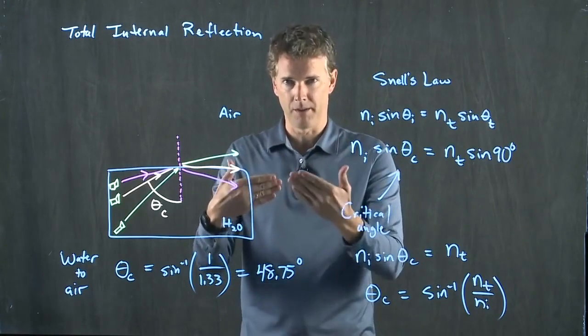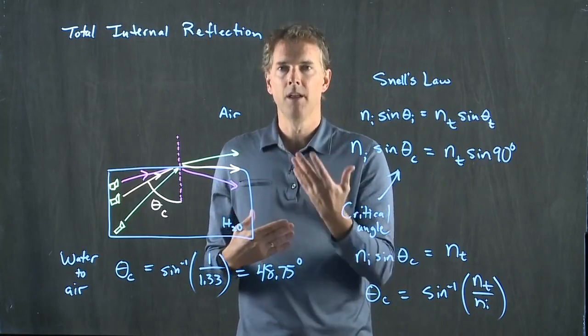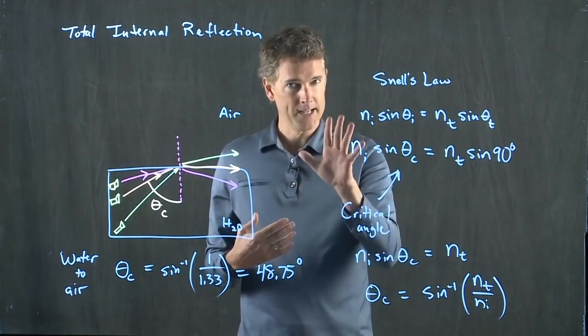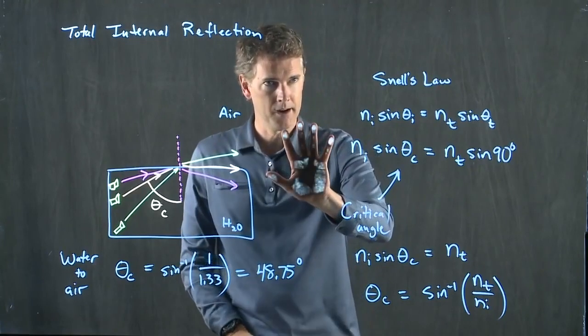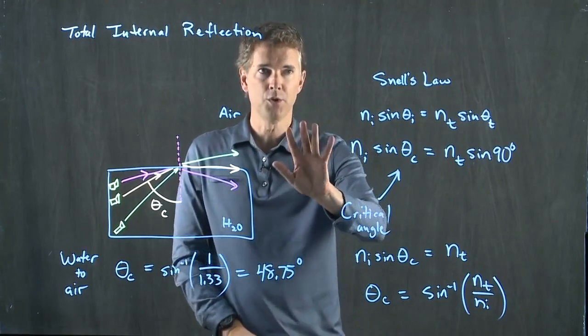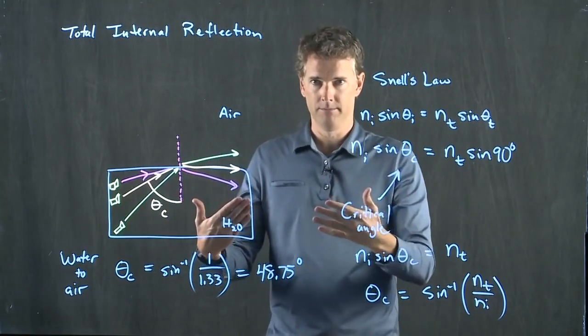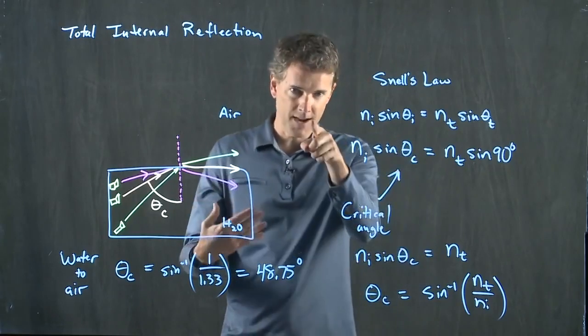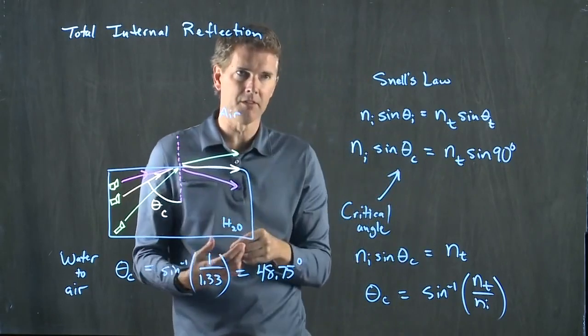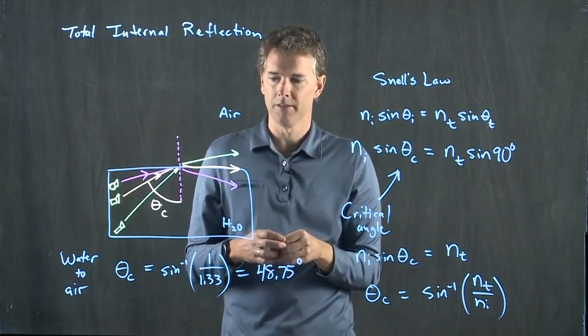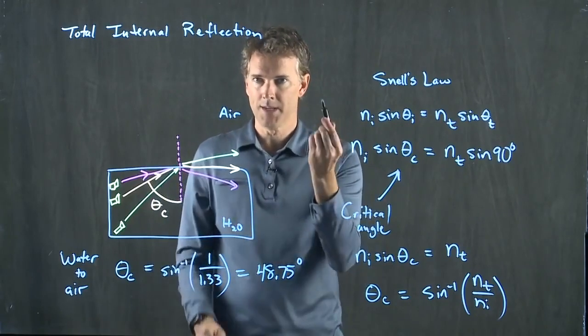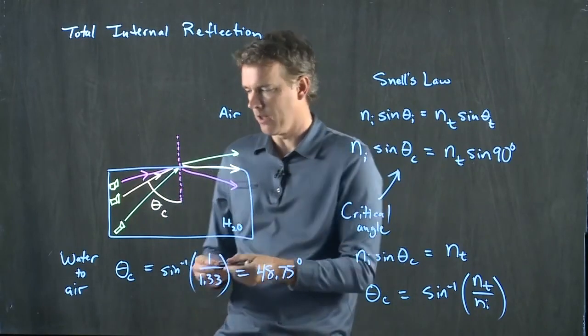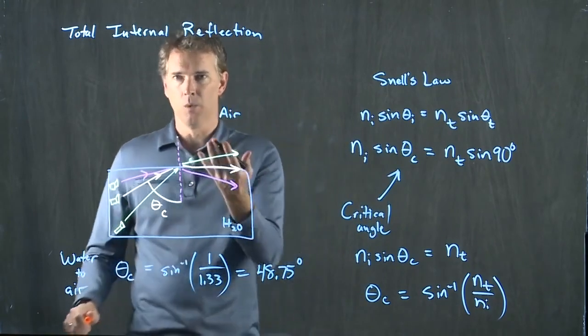Unless you put something on the glass, then it will pull the light out. So, for instance, if I take my hand and I put it right here, all of a sudden you can see that light get pulled out. And in fact, if you look closely, you can probably still see some of my fingerprints on the glass, or you take a pen and you write on the glass and that ink will pull it out.